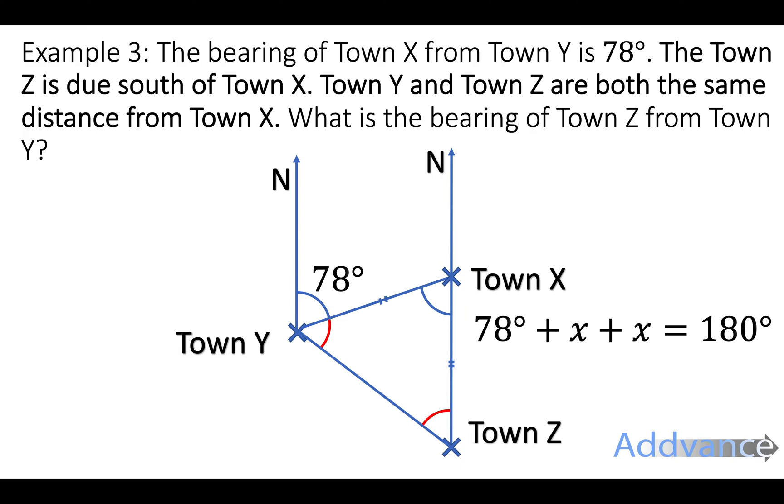So 78 plus X plus X is 180. X plus X is the same as 2X. And then we're going to take 78 degrees off both sides, and we get 2X is equal to 102. Now we're going to divide by 2. So 2X divided by 2 gives you X as 51 degrees. So 2X was 102, X is 51 degrees. So these two angles are 51 and 51. We now know lots of angles. Hopefully we can work out the final answer now.